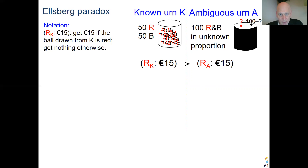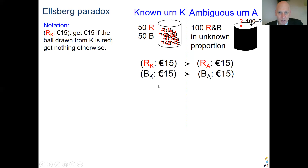We can do the same story for gambling on black. Of course, black or red doesn't matter. If you can gamble black from the known urn or black from the unknown ambiguous urn, again most people prefer the known probability — the known urn. So they have this preference again.